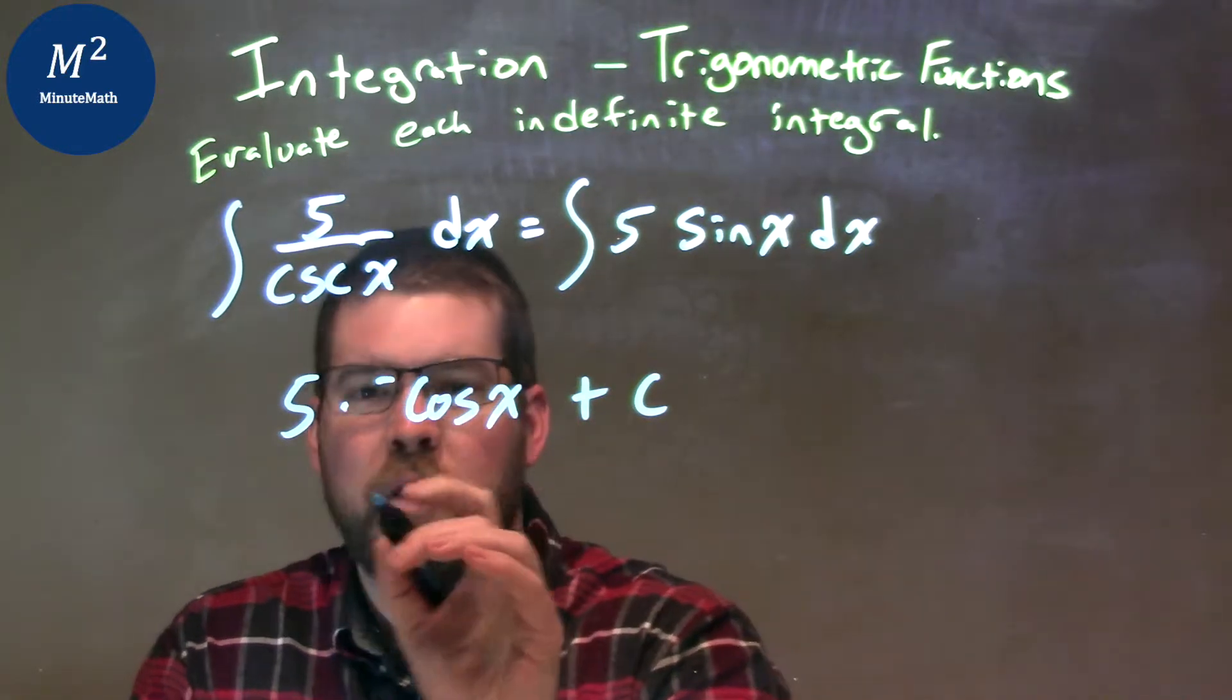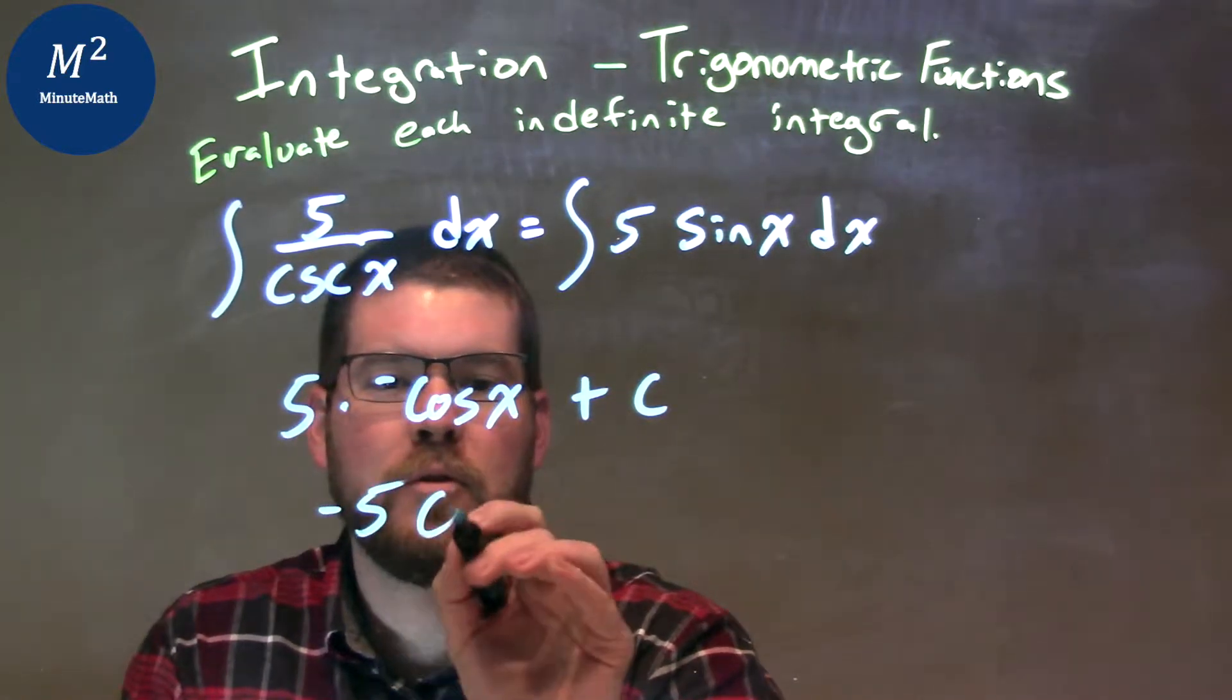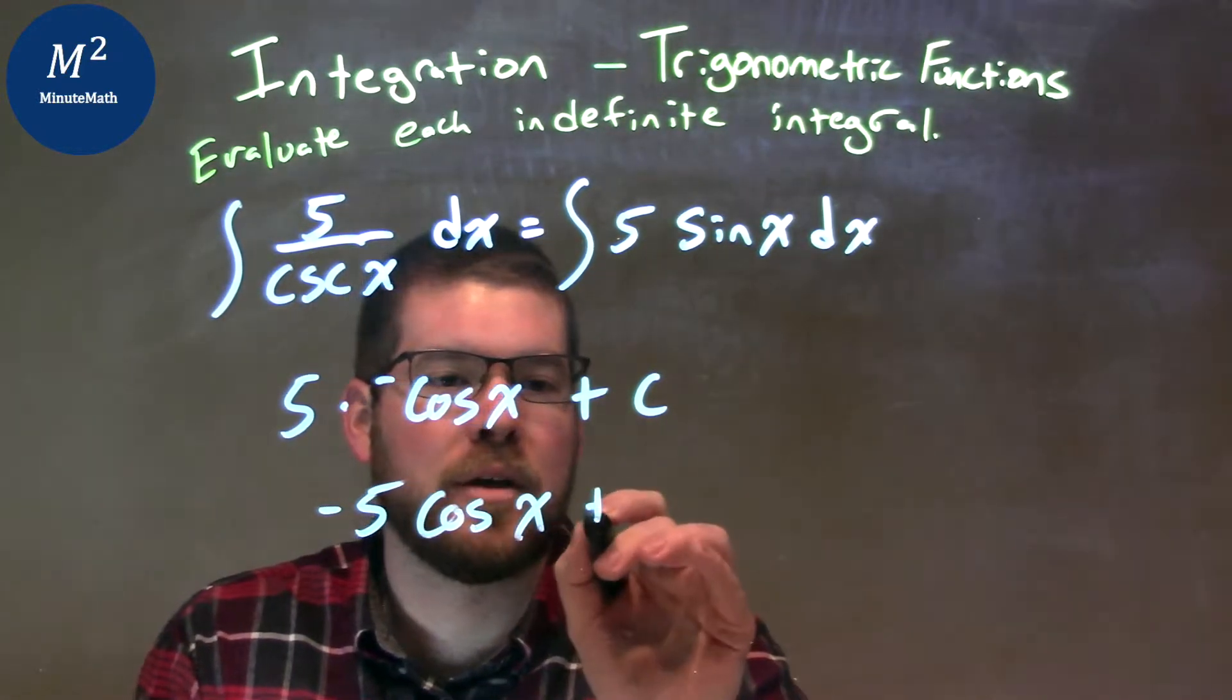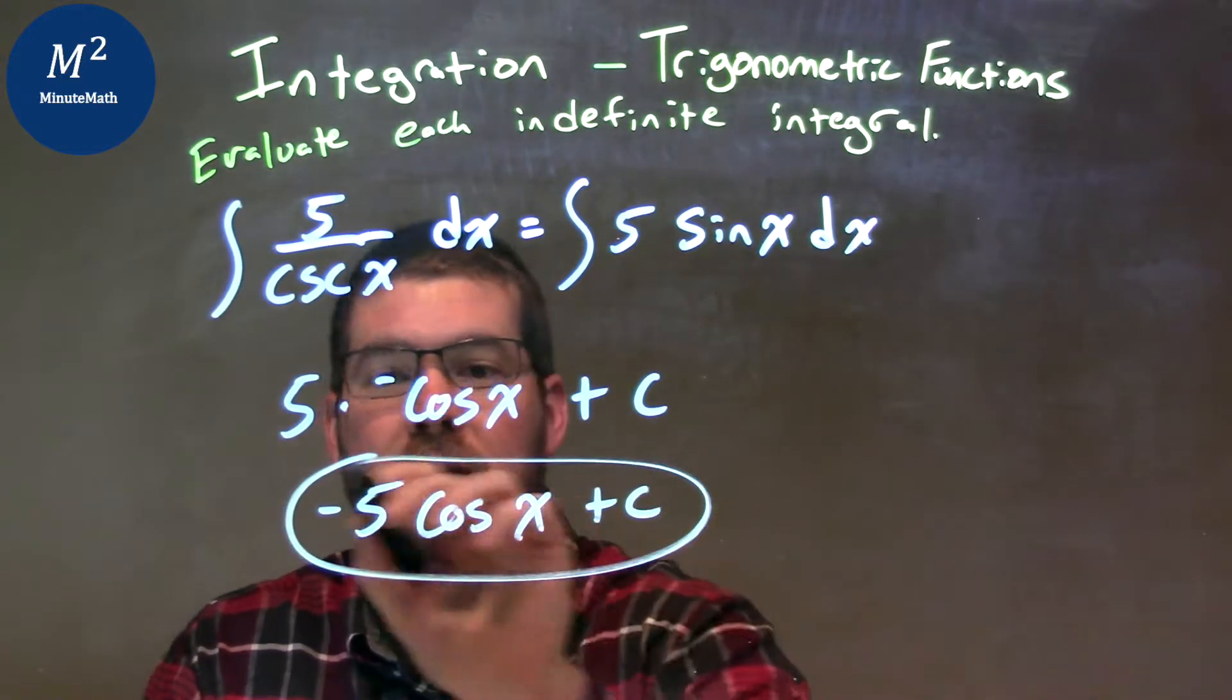Once we simplify this, the negative just goes out front. So, it's negative 5 cosine of x plus c, and there we have it, our final answer.